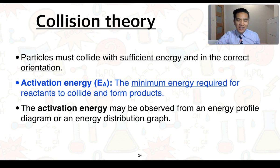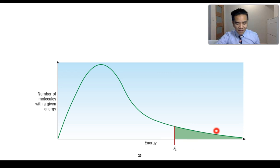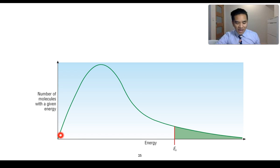We can observe activation energy from an energy profile diagram as well as an energy distribution graph. The energy distribution graph shown here represents the distribution of particles with various energies. For a particular reactant, only a certain proportion of reactants have the necessary energy required for them to collide successfully and form products, while a range of particles don't have sufficient energy. We can work out how much by measuring the area underneath the curve - the proportion with sufficient energy is reflected by the area past the activation energy threshold.